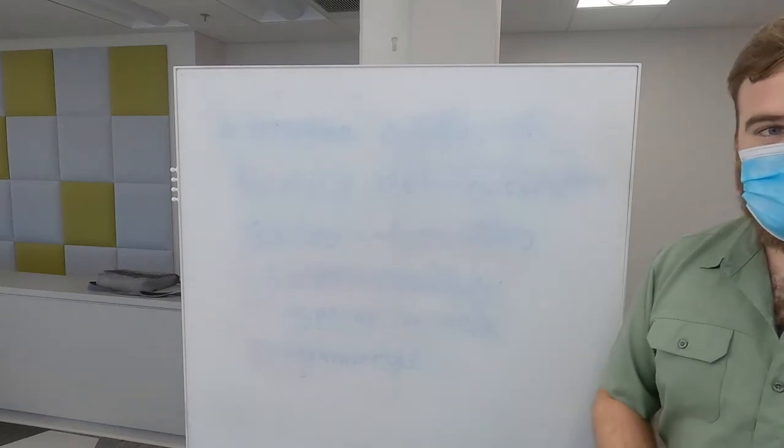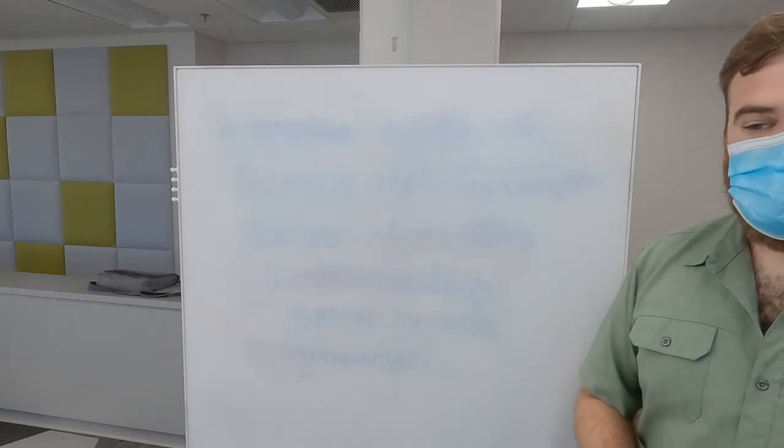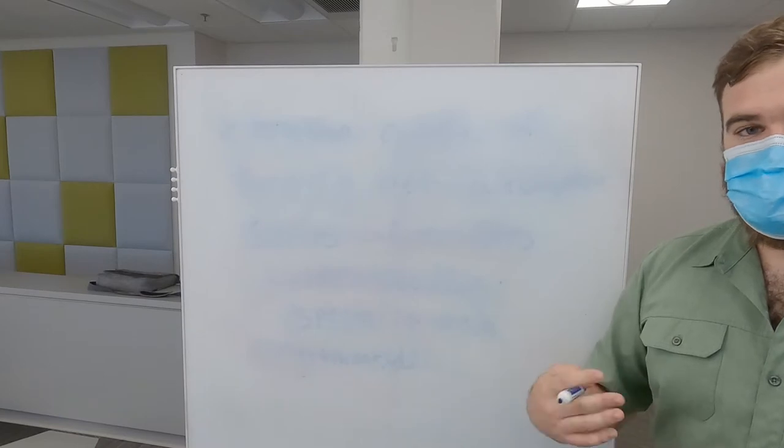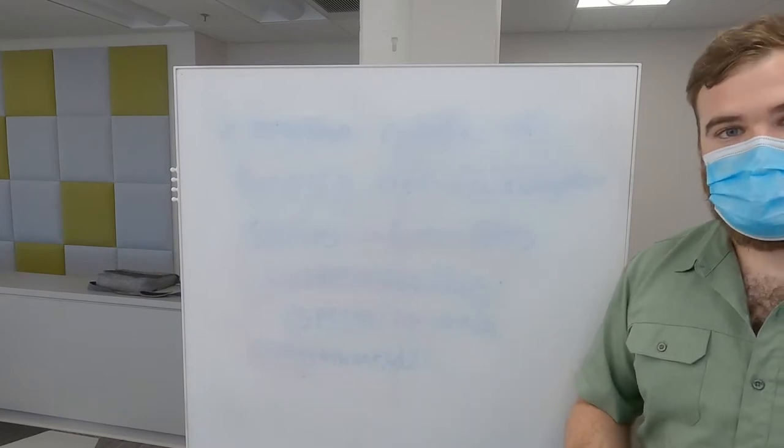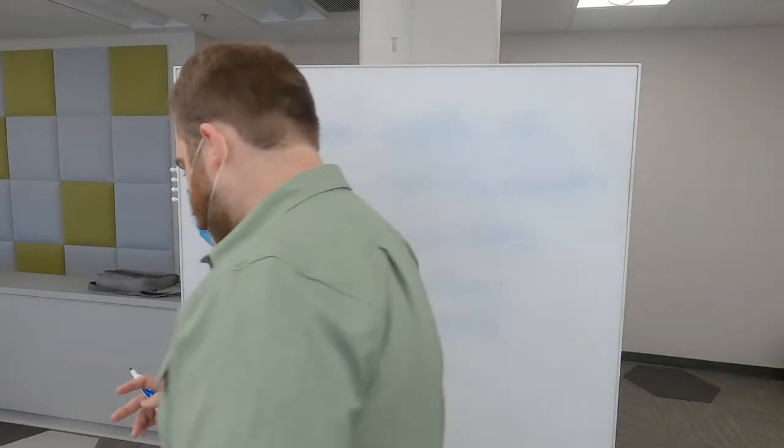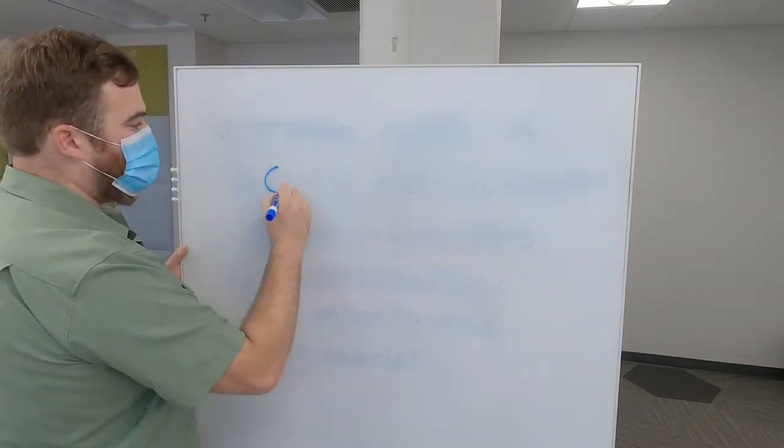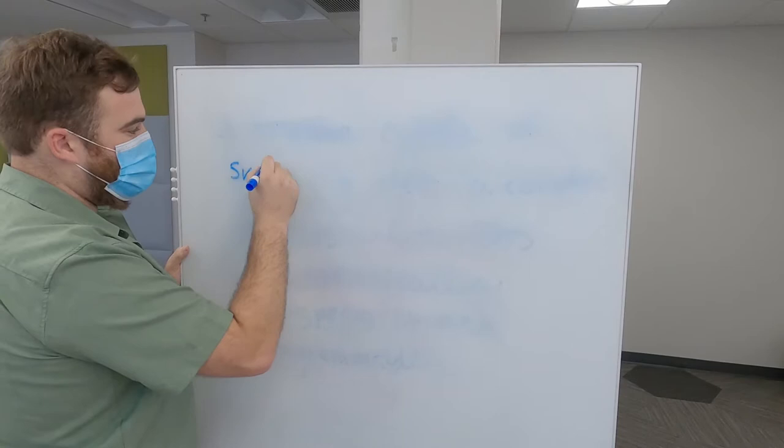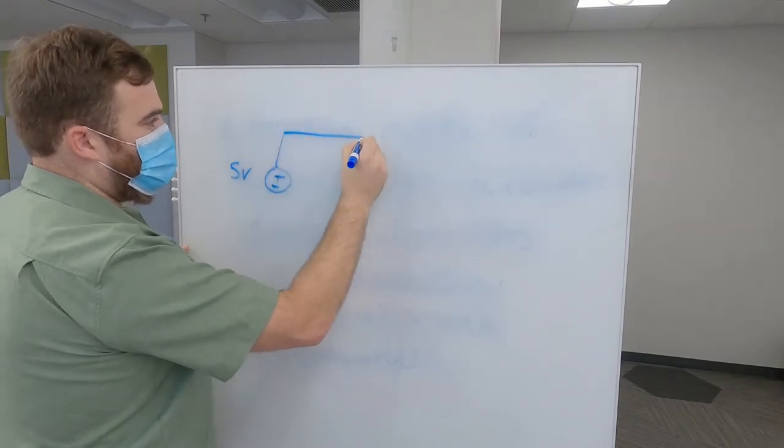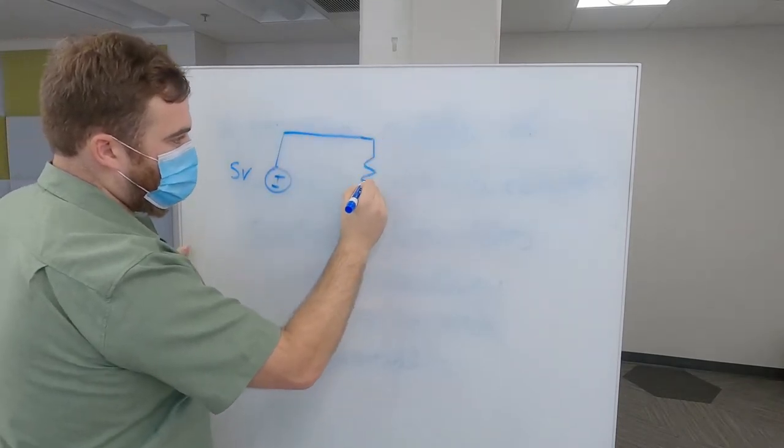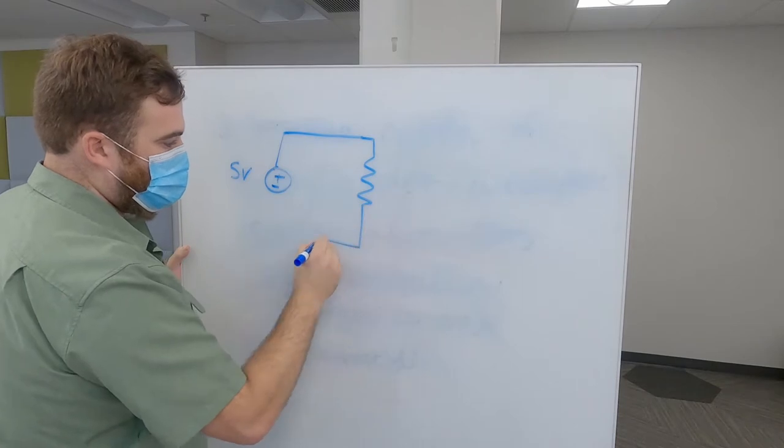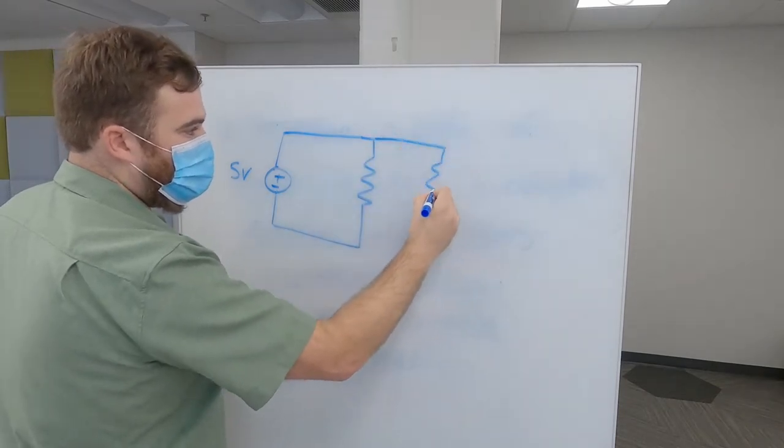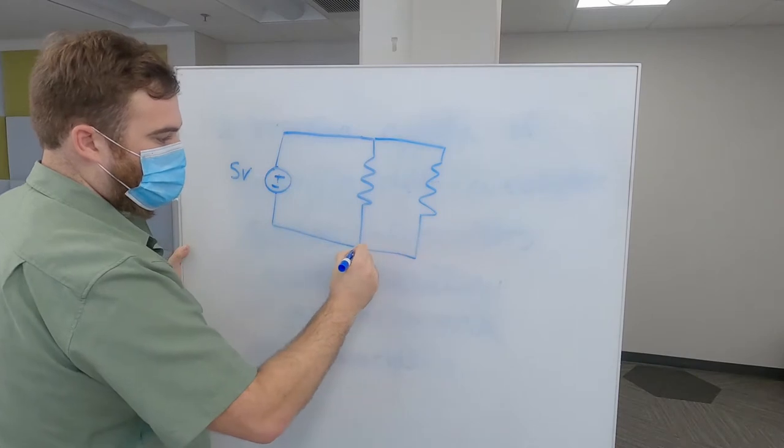Hey everyone, so I'm going to talk to you all quickly today about how to calculate total resistance in parallel circuits. So let's start with a circuit with a power supply. That's called a 5-volt power supply. And we're going to have two resistors here, but they're going to be in this configuration.